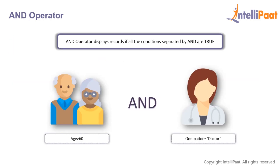With the AND operator we can fetch those records which satisfy all of the conditions separated by AND. For example, if we want to find all the doctors whose age is greater than 60, there are two conditions: the age needs to be greater than 60, and the occupation needs to be doctor. We'll get only those records where both conditions are satisfied.